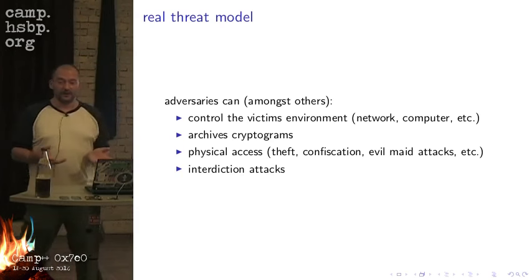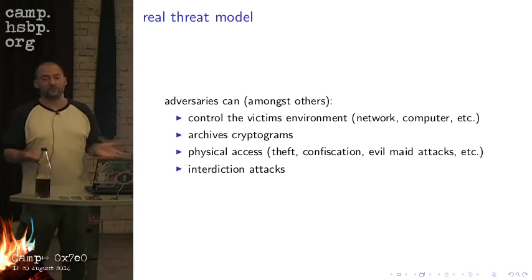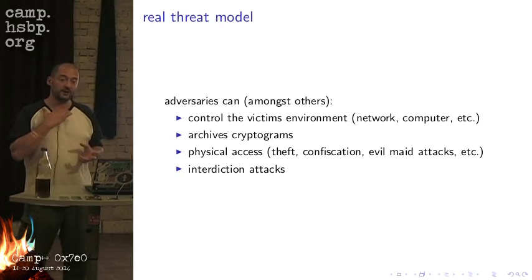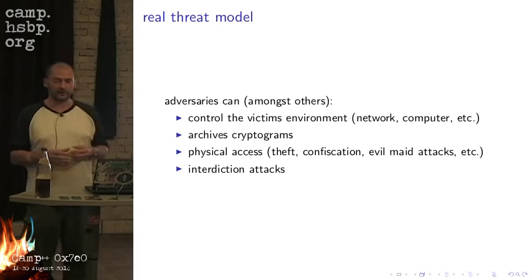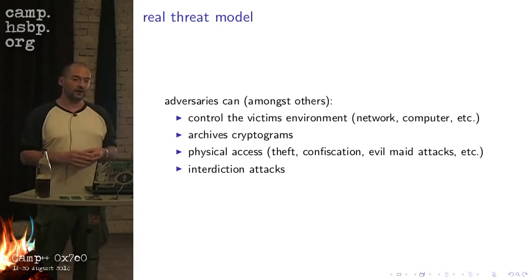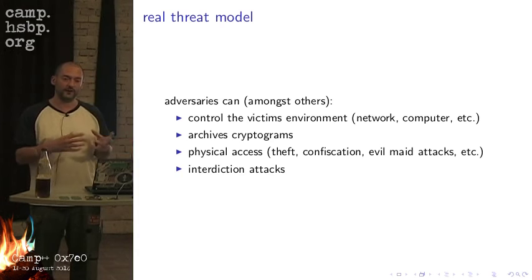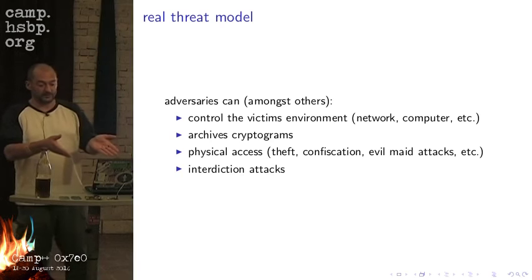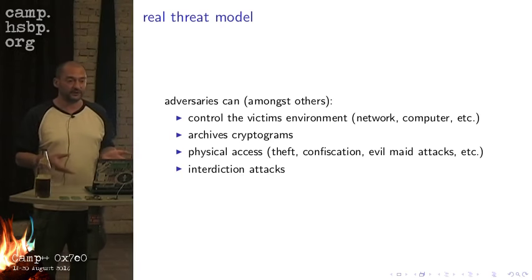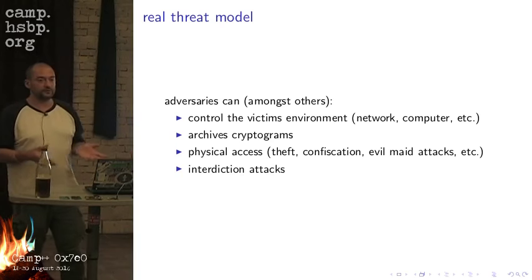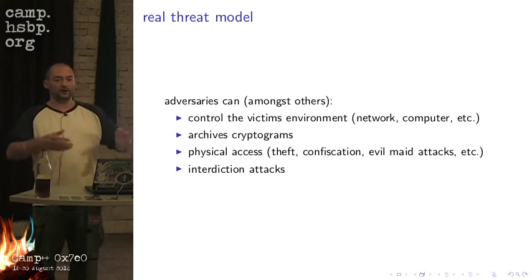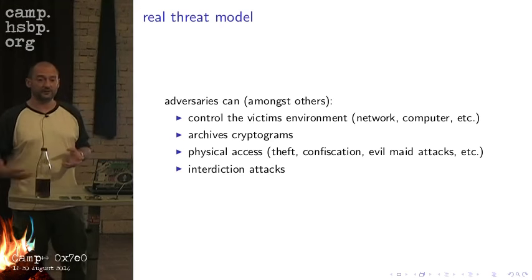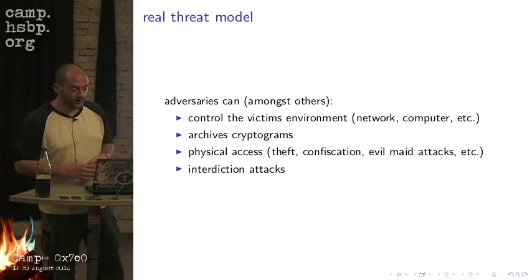We also know that adversaries — at least the NSA before Snowden — actually archive cryptograms. Anything encrypted with PGP is easy to archive. I gave a talk on how easy it is to filter out encrypted PGP packets from network streams or forensic memory or disk images. On a simple laptop like this one, I can still do 10 megabits per second filtering of PGP packets. If you send your PGP encrypted email and it's not going over a TLS-encrypted link, it's immediately easy to filter out and store for later use.